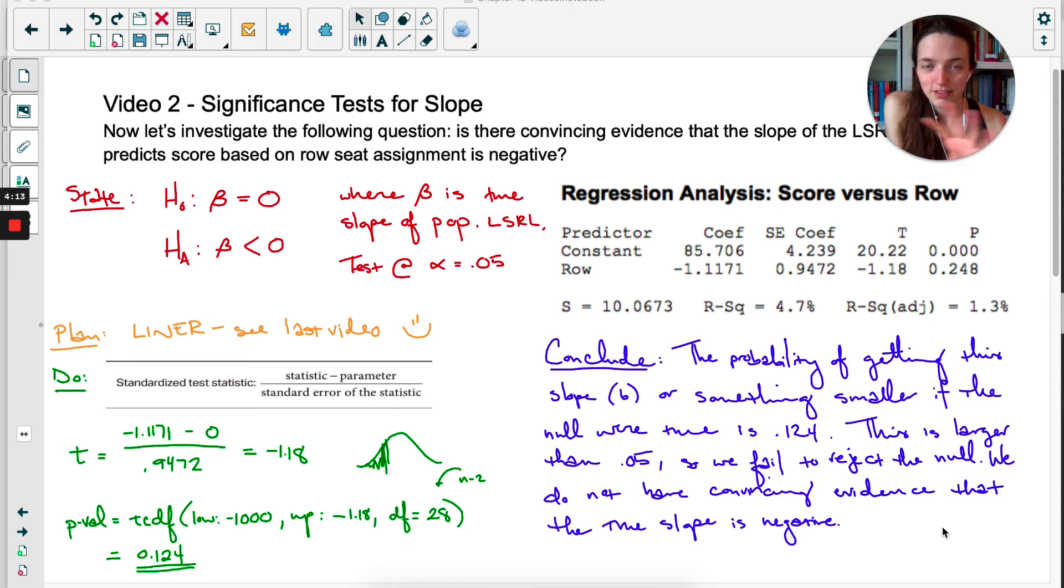The core idea of a significance test here is still the same. So if any part of this four-step process is confusing, you might want to go back to the significance test chapter, which is chapter nine, just so that you can refresh your memory on how a significance test works. But the details here have only been changed a little bit for slope.